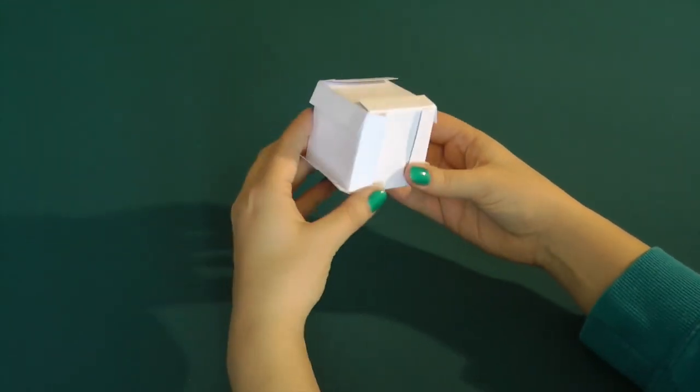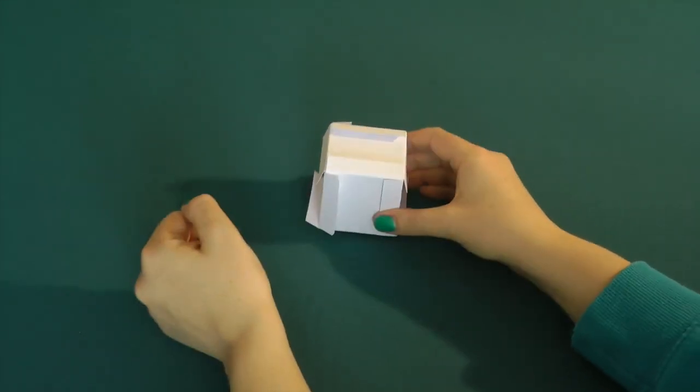This is the basic unit of construction of the Menger sponge and you can use the tabs to attach it together.